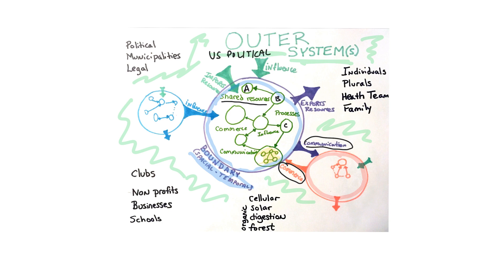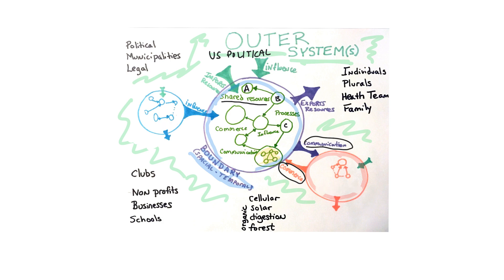Maybe we're not even in the plural universe at all — it could be politics. This is the United States political system influenced by Canada. The United States has three different systems: the executive branch of government is its own system, the judicial branch of government is its own system, and they have influence on each other. Things pass between them and they have boundaries they need to defend. The boundary moderates the amount of influence they have on each other.